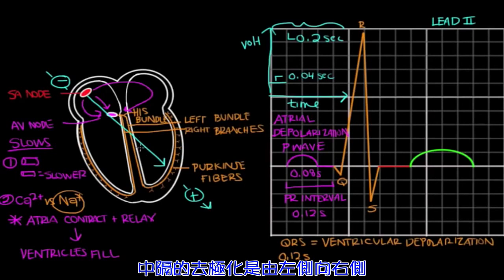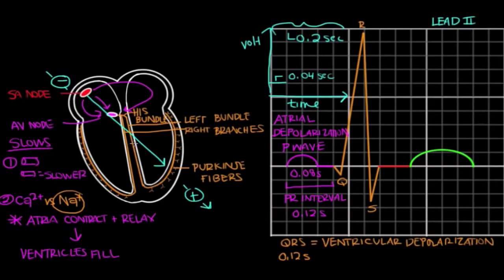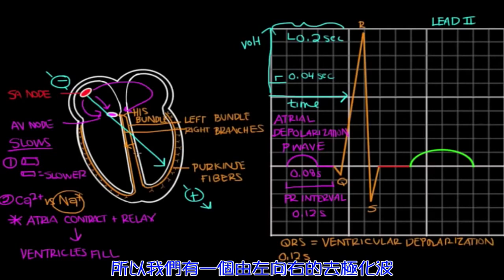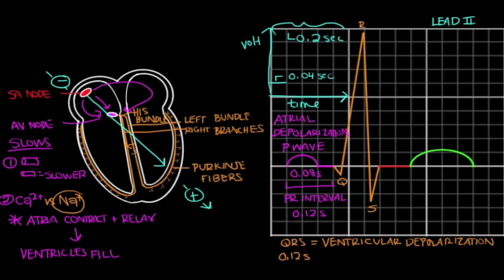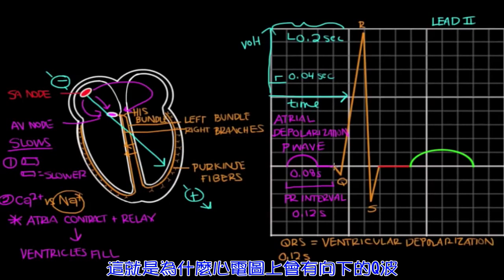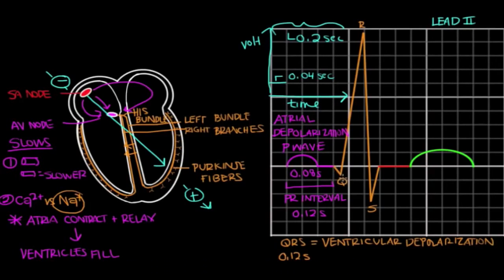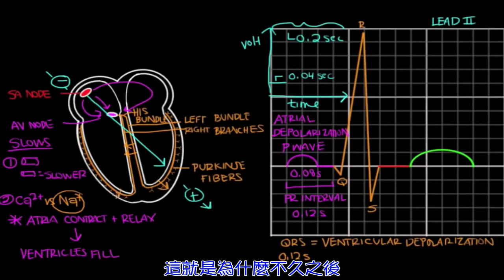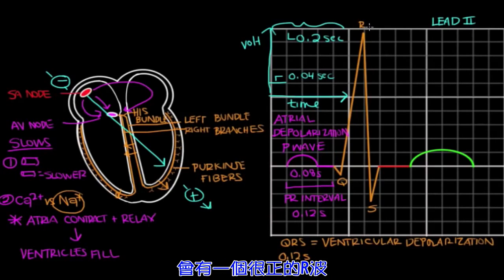Early on in depolarization, the septum is depolarizing. And the septum depolarizes from the left septum to the right septum. So you have the wave of depolarization going from the left septum to the right septum. You'll notice that this wave of depolarization moves in a different direction than lead two, which is why you get this first initial negative deflecting Q wave on EKG. However, quickly after, the wave of depolarization spreads throughout the ventricles, which is why you have the positive high amplitude R wave shortly after.